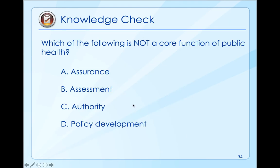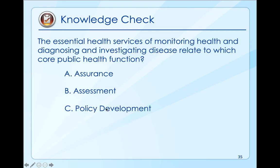Which of the following is not a core function of public health? Assurance, assessment, authority, or policy development? The answer is authority. We do work to do assurance and assessment and policy development, but we are not the people that police - we partner with law enforcement to do the policing. The essential health services of monitoring health and diagnosing and investigating disease relate to which core public health function? Assurance, assessment, or policy development? The answer is assessment. When we investigate and we diagnose, that is considered assessment.